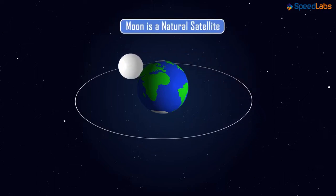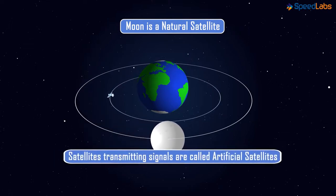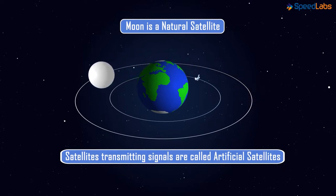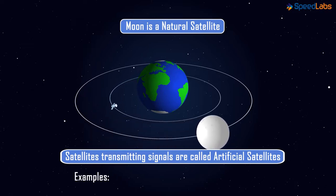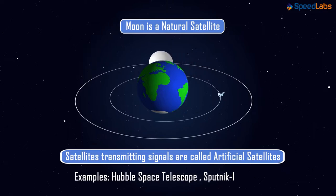The satellites that give us the transmitting signals are called artificial satellites. These satellites are completely man-made and sent from the earth itself into space and revolve around the earth more closely than the moon. Examples of such artificial satellites are the Hubble Space Telescope and Sputnik 1.